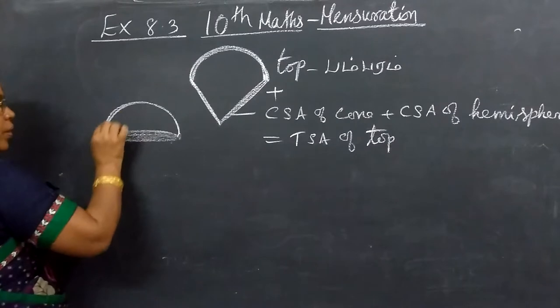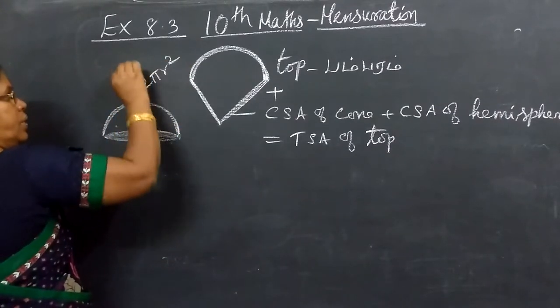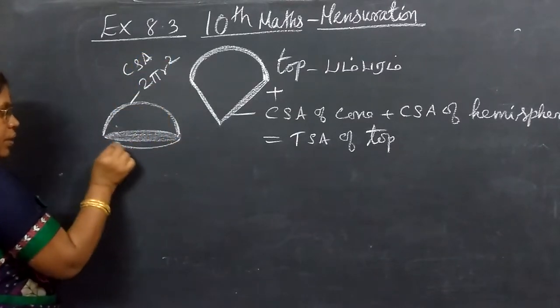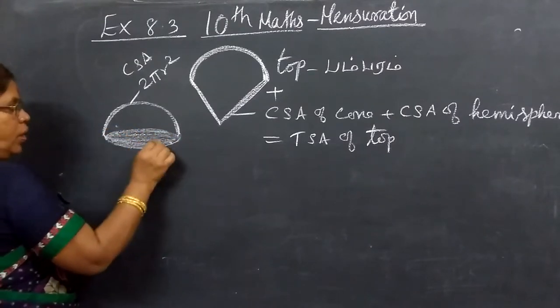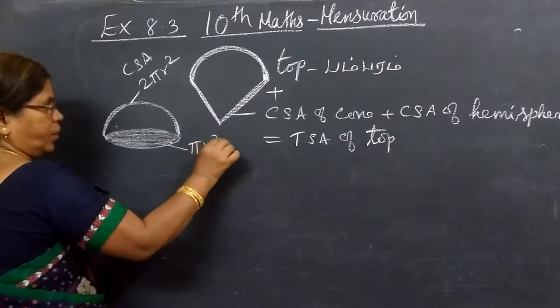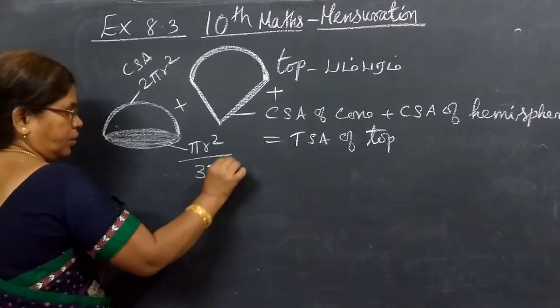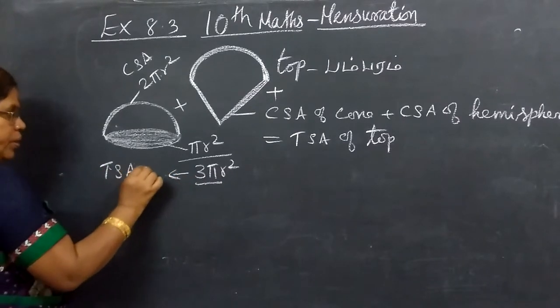2 pi r square, 2 pi r square CSA. We are getting 3 pi r square, which is equal to total surface area of hemisphere.